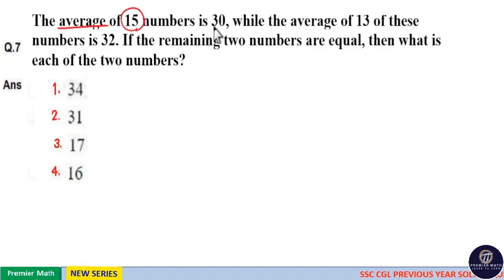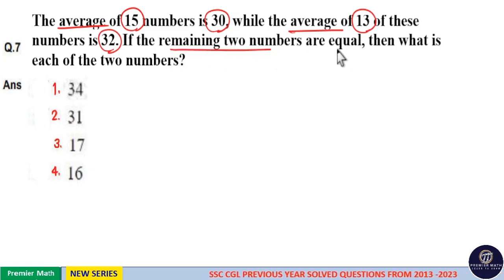The average of 15 numbers is 30, while the average of 13 of these numbers is 32. If the remaining two numbers are equal, then what is each of the two numbers?